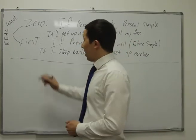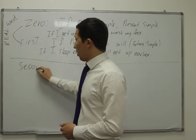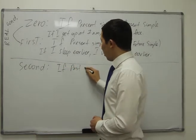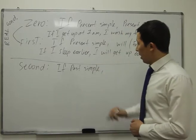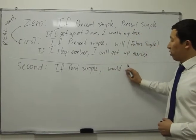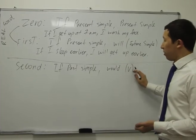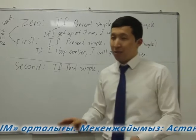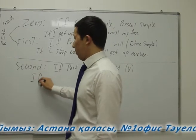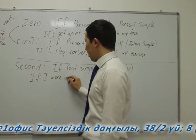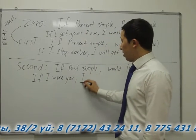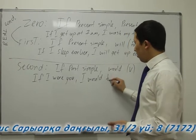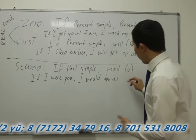So, third part: the second conditional. The formula is if + past simple. After 'would' you put the base form of the verb — no change. For example: if I were you, I would travel around the world.